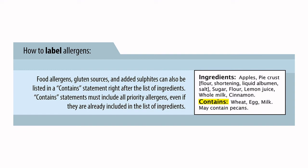Food allergens, gluten sources, and added sulfites can also be listed in a 'contains' statement right after the list of ingredients. These 'contains' statements are becoming much more common as allergen labeling requirements become more standardized within Canada. As long as the 'contains' statement covers every single priority allergen present in your product, you do not then have to separately highlight them within the ingredient list in a bracketed form.